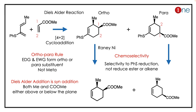The next step involves adding Raney nickel. Raney nickel is a selective reducing agent — it removes the thio ether and replaces it with hydrogen. The key concept to learn here is that in the Diels-Alder reaction, ortho and para products form when the alkene is substituted.